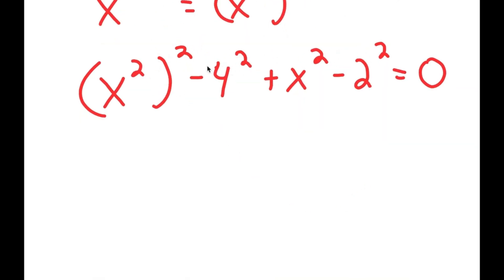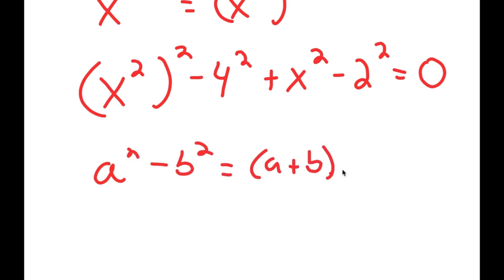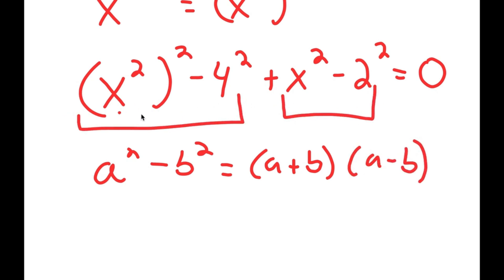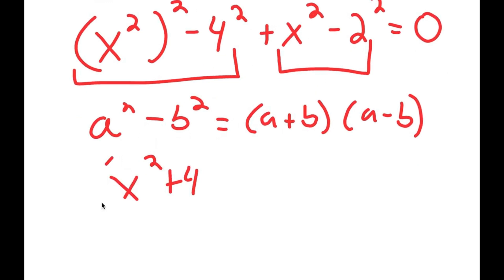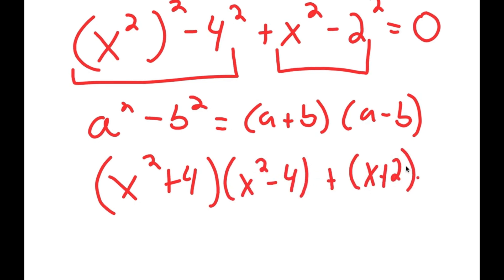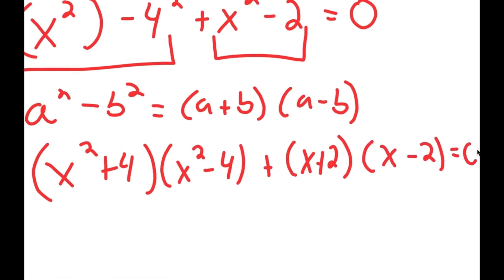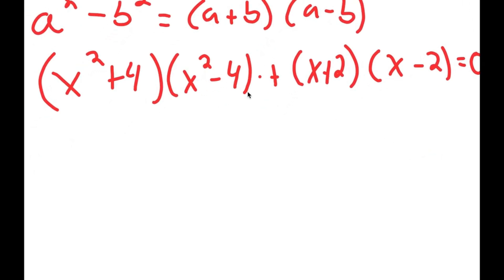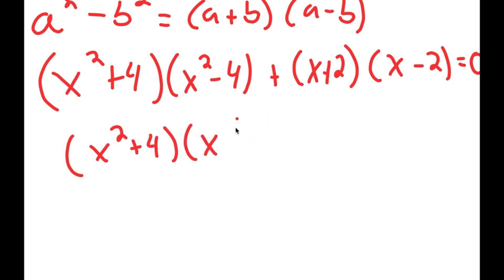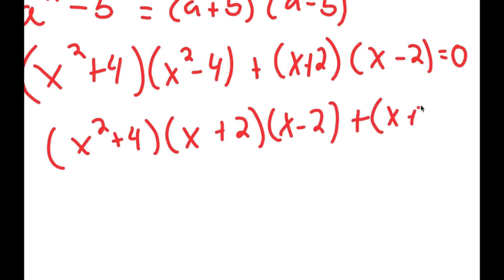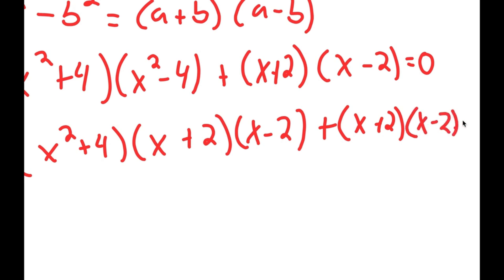Notice how everything is in the power of 2, and if I have something in the form a squared minus b squared, this is equal to a plus b times a minus b. We're going to use this property on these two groups. So I first get x squared plus 4 times x squared minus 4, plus x plus 2 times x minus 2, is equal to 0.